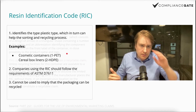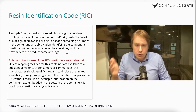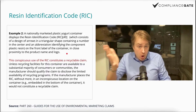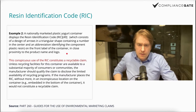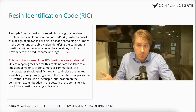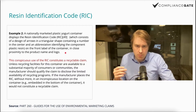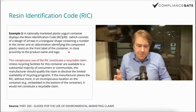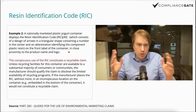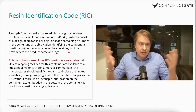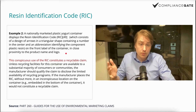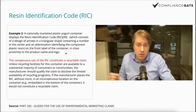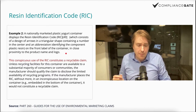This is a quote from Part 260, the Guides for Use of Environmental Marketing Claims, which you can find on the eCFR website. As an example, a company selling yogurt used the Resin Identification Code prominently on the front label close to the product name and logo, which implied the packaging was environmentally friendly. Clearly the FTC doesn't like that. I recommend reading this example on the eCFR website as there are other similar cases. It essentially comes down to greenwashing — you have to be careful when using this symbol.